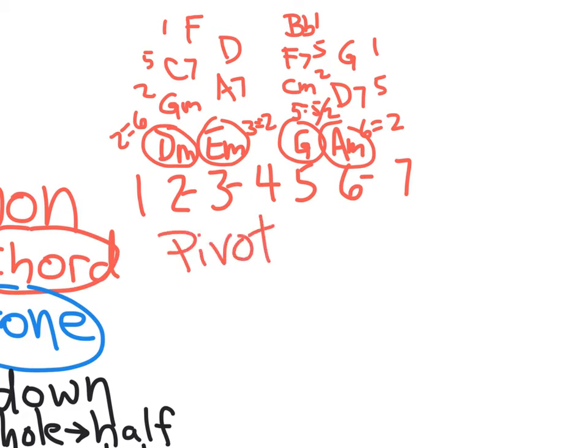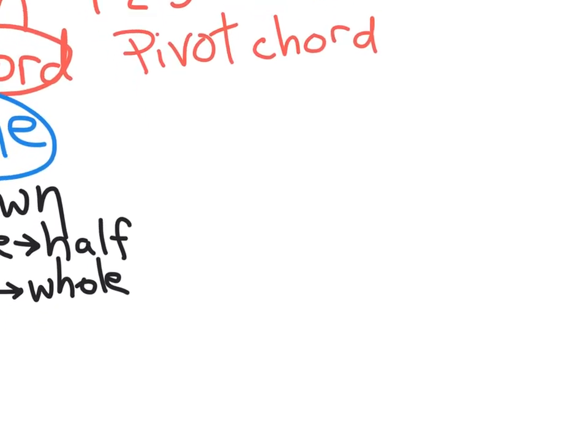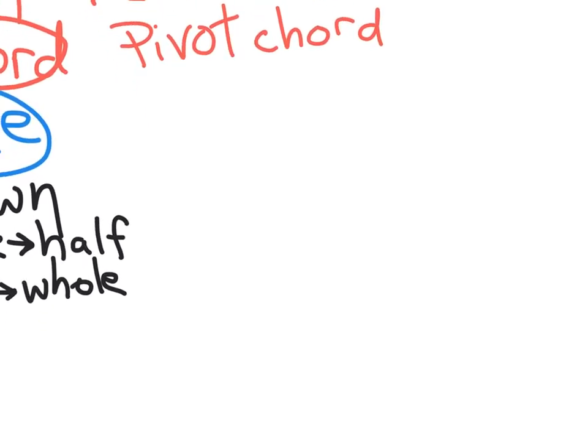The whole point is that we would find some kind of a pivot that belongs in both keys so that we can start in the key of C, and it doesn't sound odd until we tip our hand and show that we're heading toward a different key. That's the whole point.